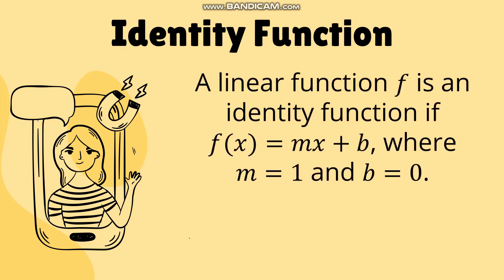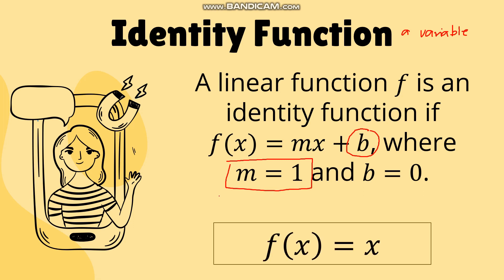An identity function is a linear function f where m equals 1 and b equals 0, so there is no constant term and we are left with just the variable. It is the opposite of the constant function: if a constant function has no variable, an identity function has just a variable with no constant. Examples include f of x equals x, f of z equals z, and g of h equals h.